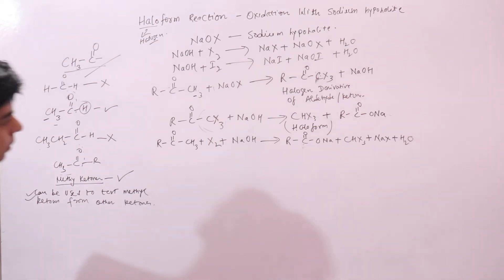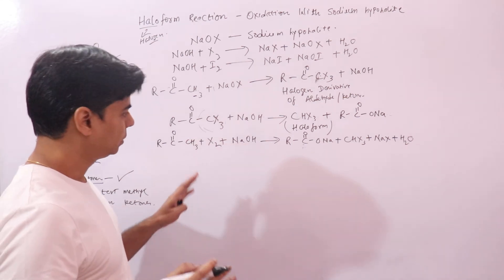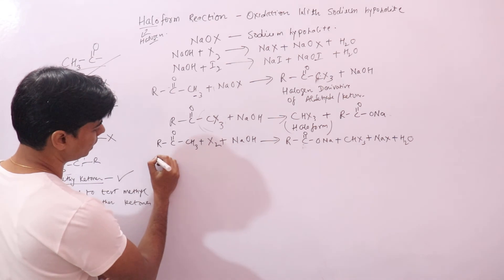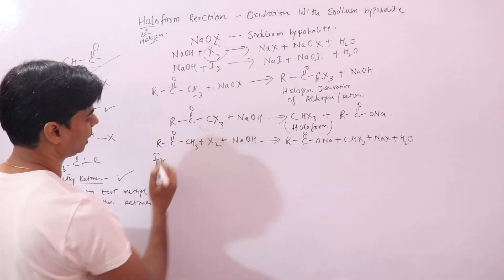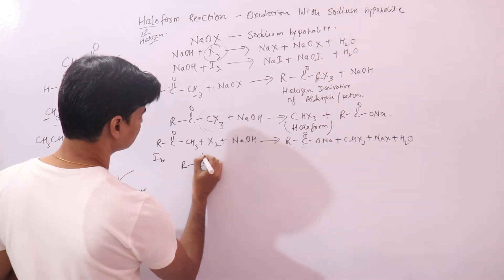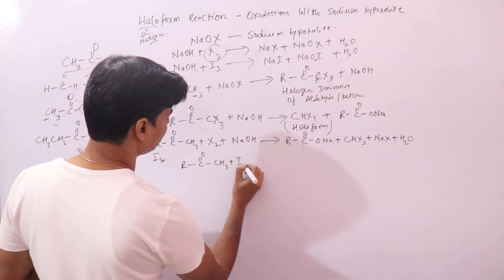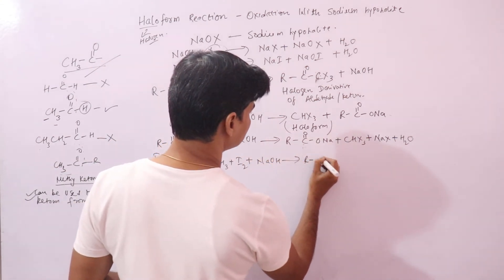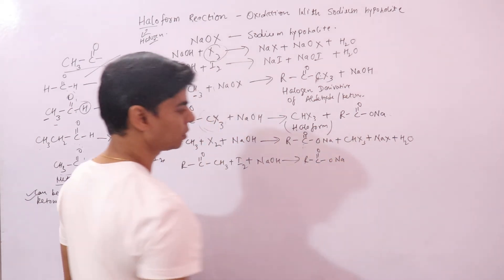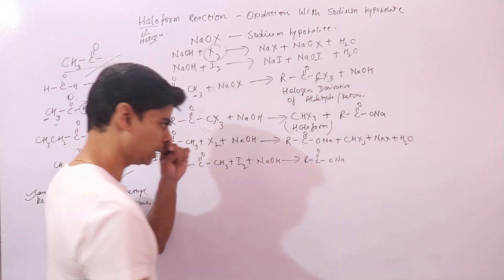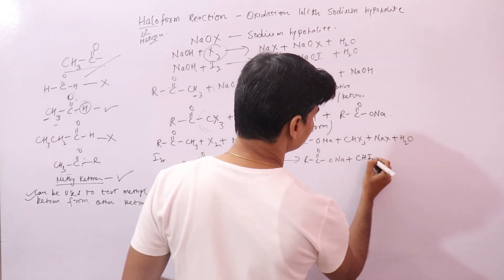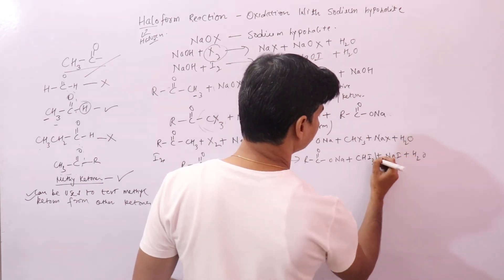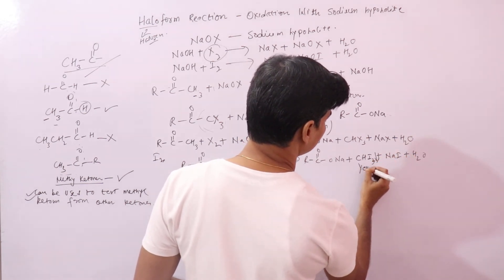Writing the reaction specifically with iodine: the substrate plus iodine plus sodium hydroxide gives RCOONa — the sodium salt of the carboxylic acid — plus CHI3 plus sodium iodide plus water. The CHI3 is your precipitate, a yellow precipitate of iodoform. This is an important reaction.